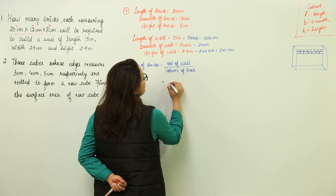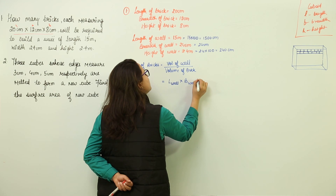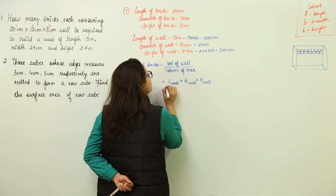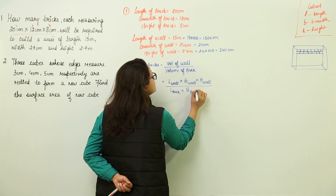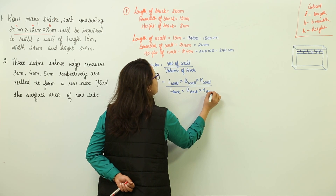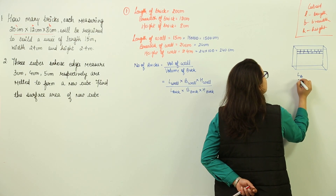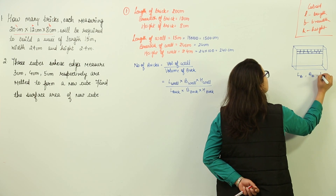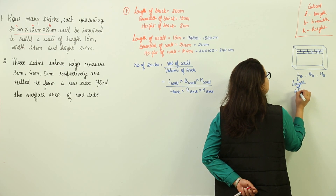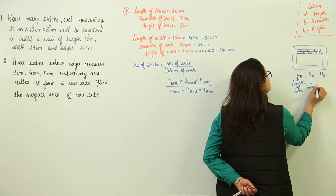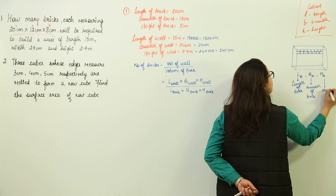Volume of the wall equals length of wall multiplied by breadth of wall multiplied by height of wall. This is then divided by the volume of the brick: length of brick multiplied by breadth of brick multiplied by height of brick. I have written abbreviations — LB for length of brick, BB for breadth of brick, and HB for height of brick.